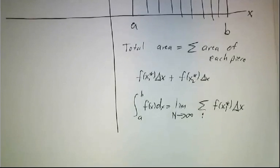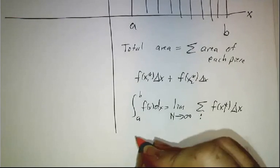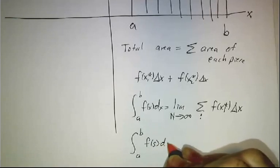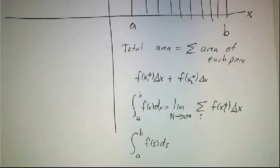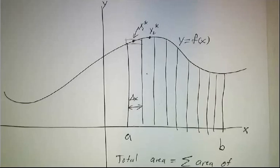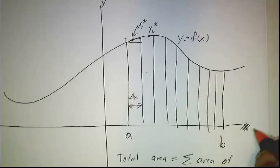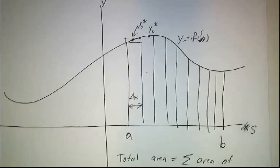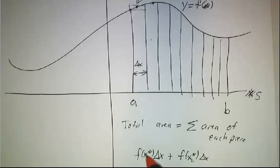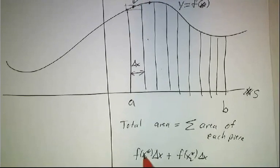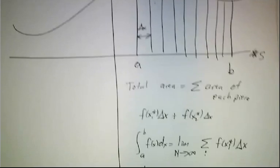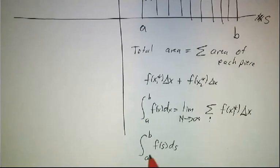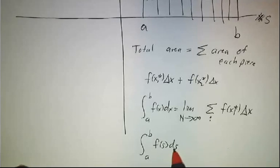Now one thing to note about the definite integral is if I asked you what's the integral from a to b of f of s ds, that would be the exact same thing. All we would be doing is we would be saying, instead of calling this x, let's call it s. And so instead of calling the points x1 and x2 and x3 and so on, we'd call them s1 and s2. So whether you call it f of s ds or f of t dt or f of x dx, it's all the same thing.